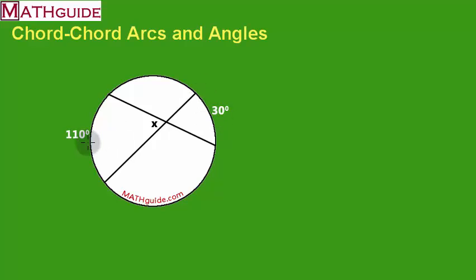And these two arcs are kind of important. Now, for the relationship that exists for the chord-chord situation that we have right here, we're going to take these two arcs. So, I'm going to take arc 1 and arc 2. We're going to add them together, and we're going to divide by 2. So, that is the relationship that we're going to use.